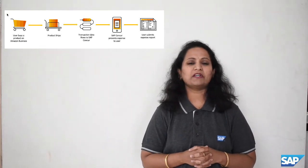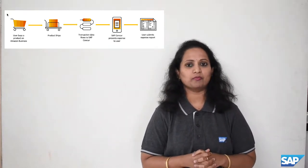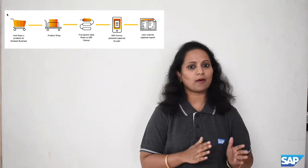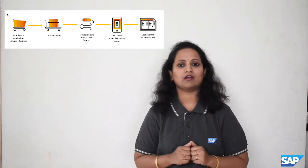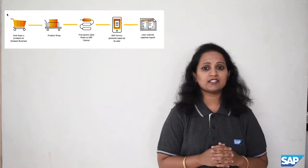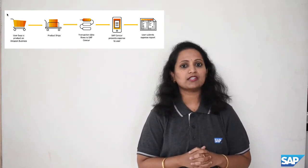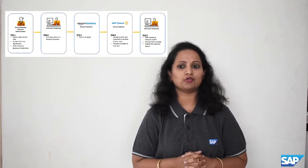The user or employee purchases a product on Amazon Business. Once the product ships, the transactions flow from Amazon to SAP Concur, and the expenses are made available in SAP Concur for the user to submit. This solution revolves around two personas: 1. Concur or Amazon Administrator. 2. End user or employee. Let's see the end-to-end flow for these two personas.